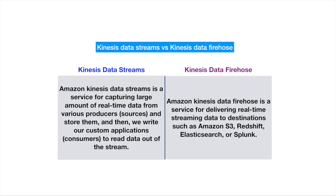Let's discuss the definitions. Amazon Kinesis Data Streams is a service for capturing large amounts of real-time data from various producers, also known as sources, and storing them. Customers write custom applications, known as consumers, to read data out of the stream. On the other hand, Amazon Kinesis Data Firehose is a service for delivering real-time streaming data to destinations.